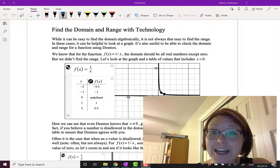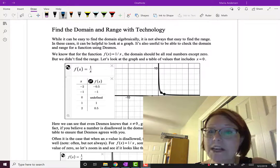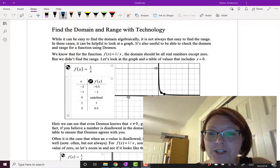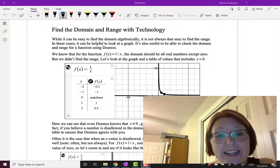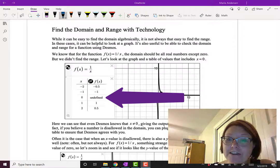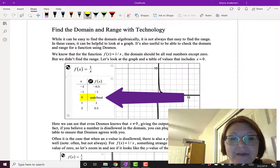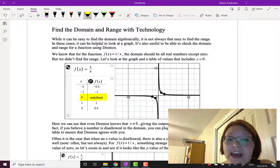Let's look at the function f(x) = 1/x. We know already that the domain should be all real numbers except zero, but we didn't find the range. If we look at a graph and a table of values that includes x = 0, what we'll find is that at x = 0 the f(x) value is actually undefined.